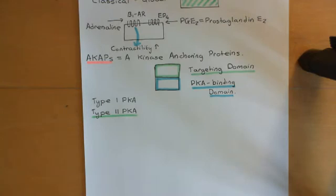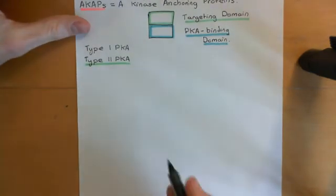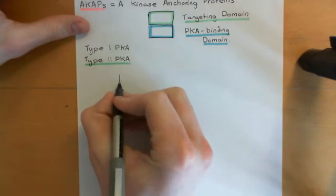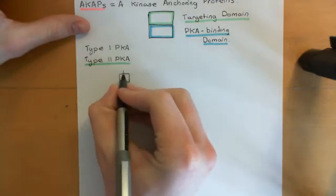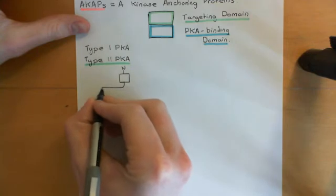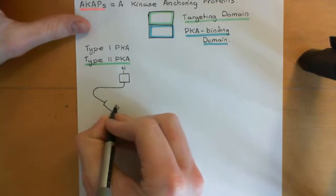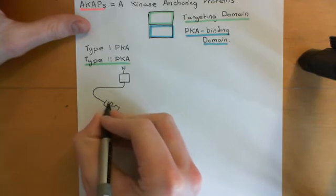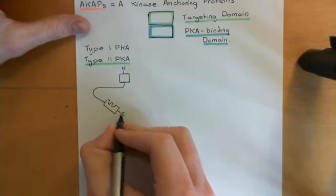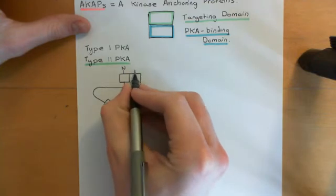Even when protein kinase A has been activated, the regulatory subunit dimer remains intact and will remain attached to the AKAP. Let's remind ourselves of the structure of a protein kinase A inactive tetramer. A single regulatory subunit has the dimerization/docking domain, followed by the linker, and then the cyclic nucleotide binding domains — cyclic nucleotide binding domain A followed by cyclic nucleotide binding domain B.